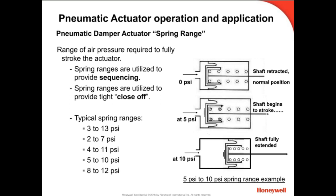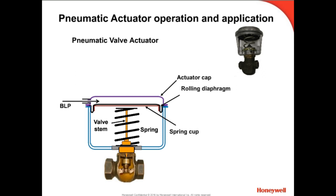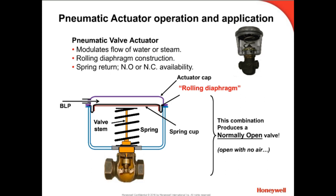The distance any shaft extends is the stroke specification, which will vary between actuator models. Pneumatic valve actuators consist of a diaphragm, push rod, and spring similar to a damper actuator. The rolling diaphragm design minimizes wear, providing a long, trouble-free actuator life. The spring-to-diaphragm relationship provides the normally open or normally closed configuration, and spring pressure ranges are available for sequential control of valves or to provide positive close-off force.